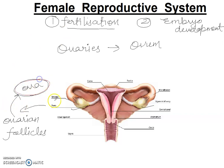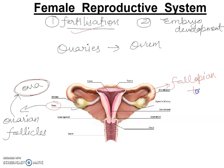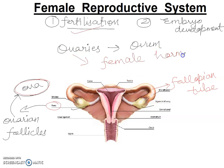These follicles finally rupture and eggs are released from the ovaries. When we talk about fertilization, it happens in the fallopian tube. The ovaries also produce female hormones — estrogen and progesterone — these two hormones are produced by the female reproductive system.